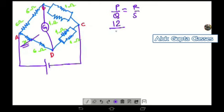So P, two resistances six and six connected in series. What is the resistance? Twelve ohm.